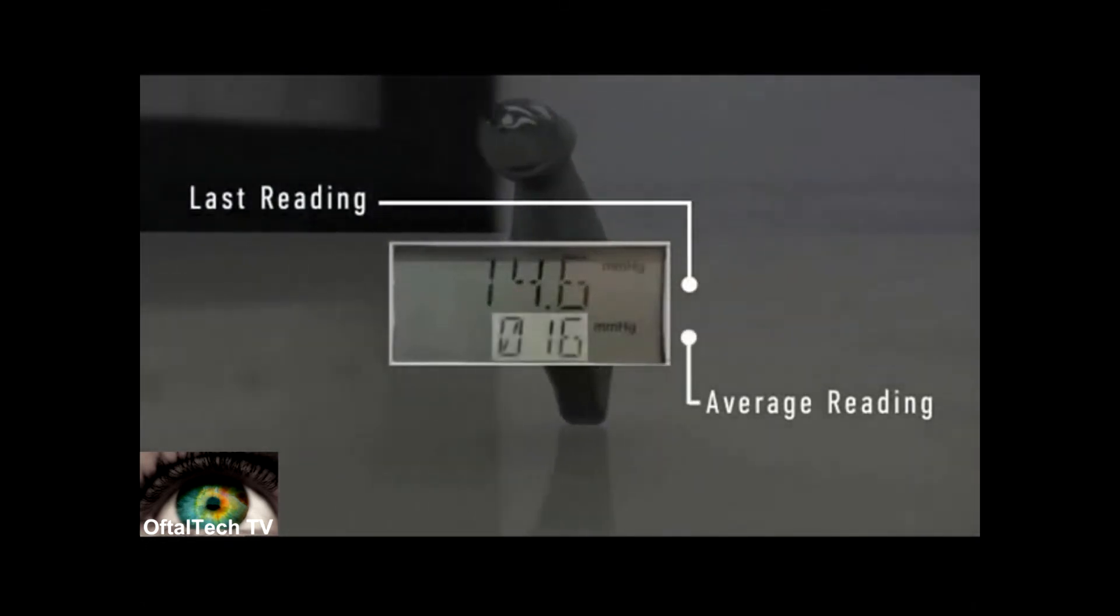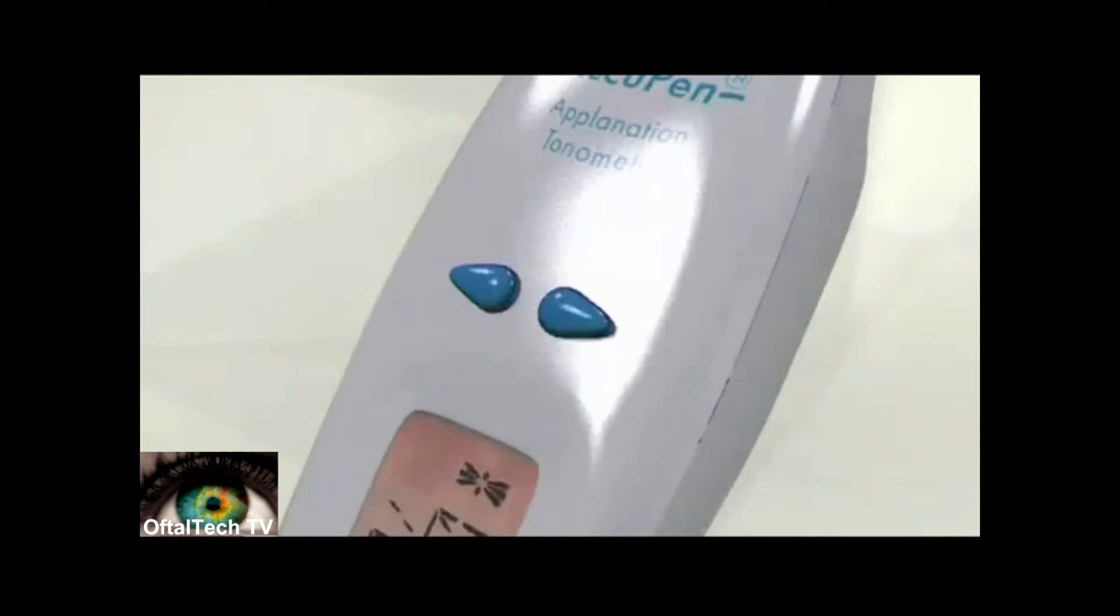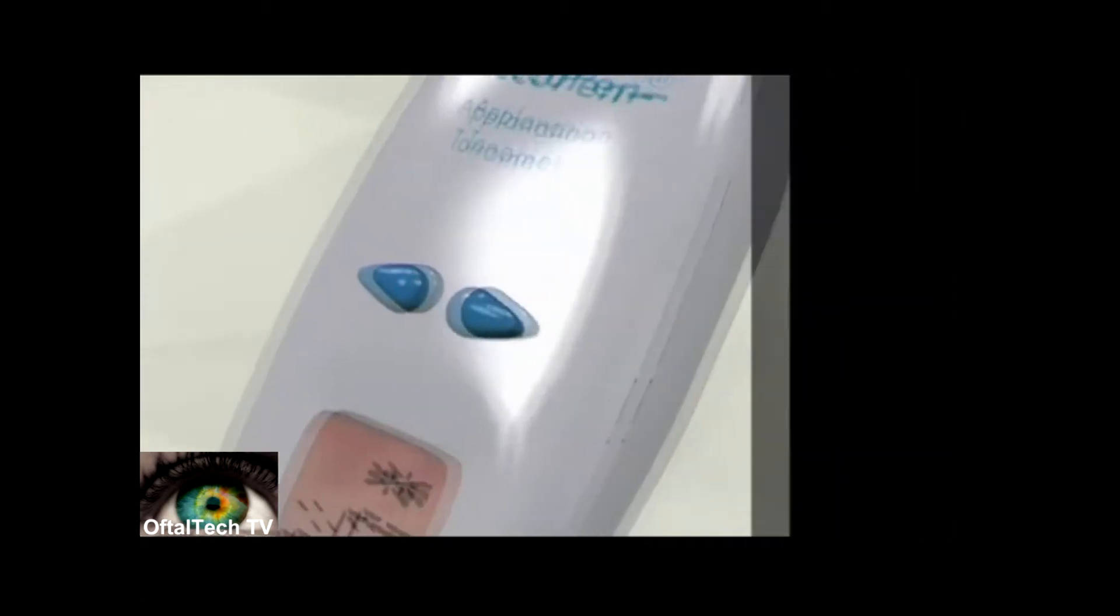To scroll through multiple measurements, simply hit the arrow buttons. If you have taken multiple measurements, an asterisk next to one of the numbers will indicate the furthest from the average. To delete individual measurements, hold down one of the arrow buttons for approximately three seconds. The unit will chirp indicating the measurement has been deleted.